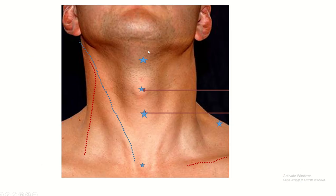Within any individual you can identify the following points: this is the hyoid bone, this is the laryngeal prominence, this is the cricoid cartilage, jugular notch, clavicle, the sternal head and the clavicular head of the sternocleidomastoid muscle, and the trapezius.